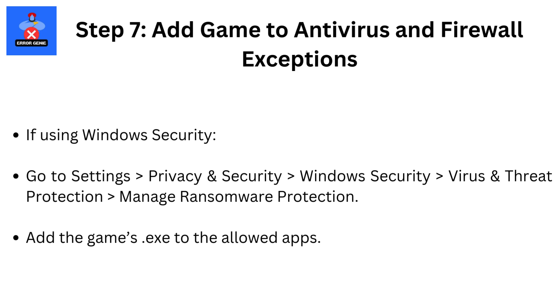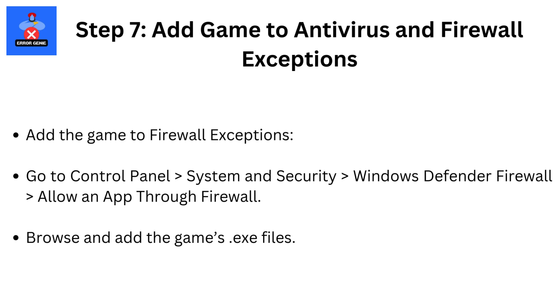To add the game to Firewall Exceptions, go to Control Panel, then System and Security, then Windows Defender Firewall, then Allow an App Through Firewall. Browse and add the game's .exe files.